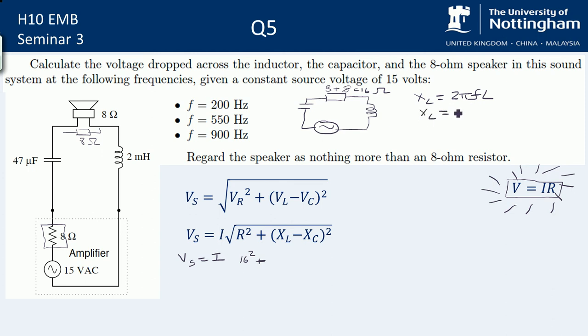So X of L, because you need to recalculate it, is 2 pi times 200 times 2 milli Henrys, which gives you X of L is about 2.5 ohms. So that can go in here, 2.5.